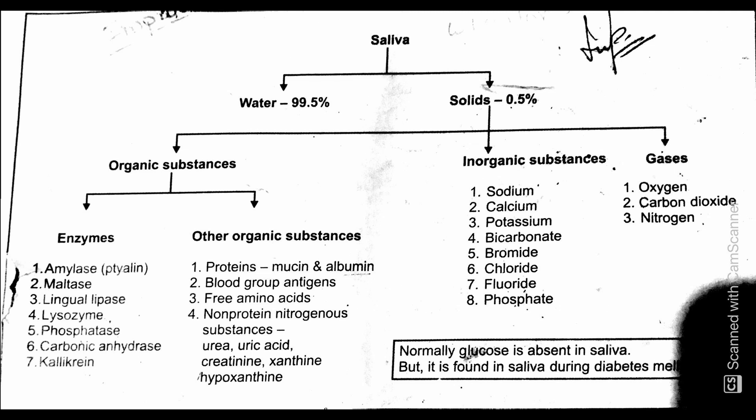The second type of solid is inorganic substances. The inorganic substances in saliva include sodium, calcium, potassium, bicarbonate, bromide, chloride, fluoride, and phosphate. In the gases there is carbon dioxide, oxygen, and nitrogen.